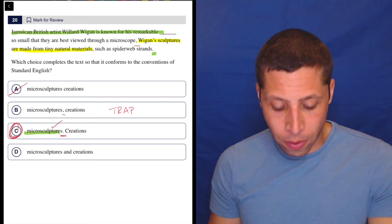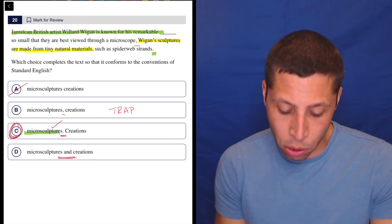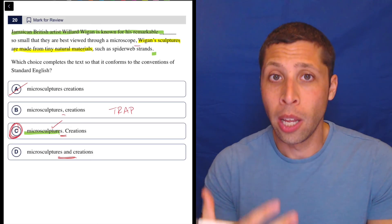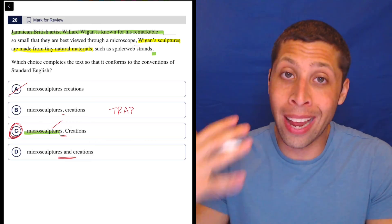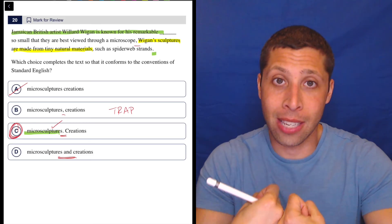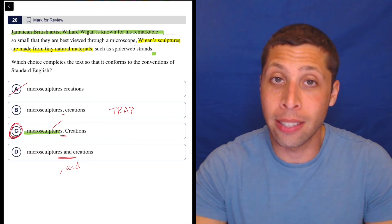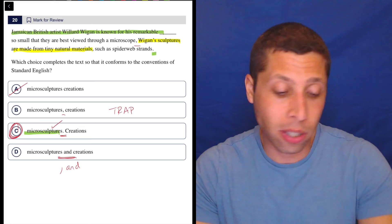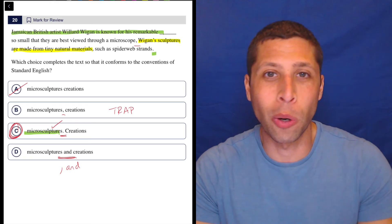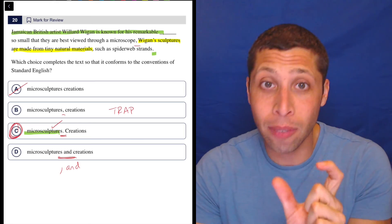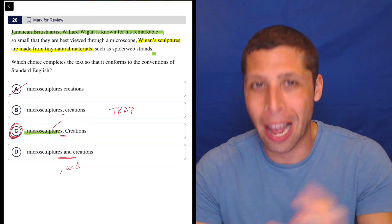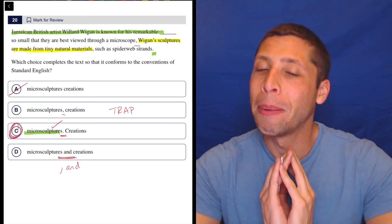Now D is also worth talking about. I don't know if I'd call that a trap. That's probably more just that you didn't memorize the rule. We could have used the word and to join these two sentences together. But in order to do that, we would have needed a comma. So that would have needed a comma before the and. And then it's allowed. If it's just an and by itself, that's not enough. It's not enough to join two sentences. That's if we have a list of two things, then we can use and without a comma to join those two things together. That's not happening here.